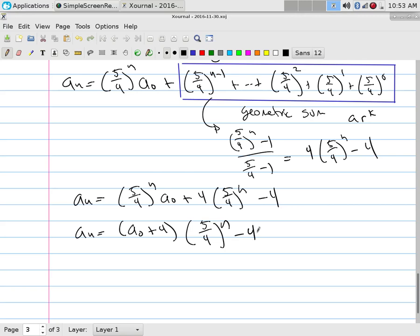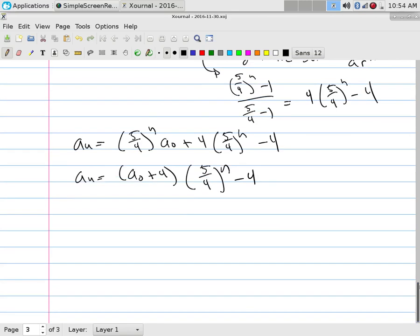If I want to find a_100, what's the only thing I do? Plug 100 in for n and you're done. That's the nice thing about closed form. In other words, I've solved it. This is the solution - this is the backwards iteration solution.